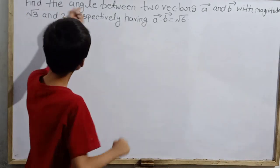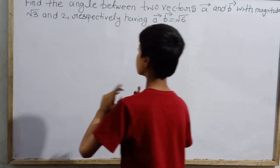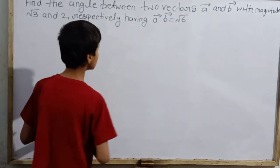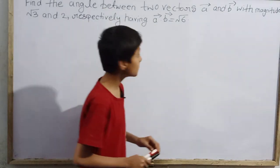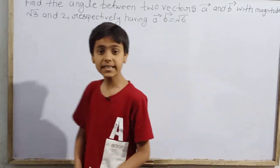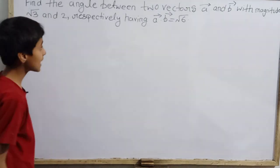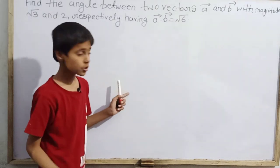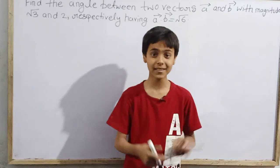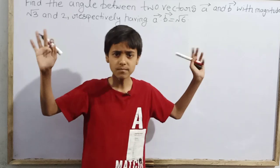Find the angle between two vectors, vector a and vector b, with magnitudes root 3 and 2 respectively, having vector a dot vector b equals root 6. This is a very simple question, it is really very easy. If you have to do math, it is just physics which we are going to study in 11th or 12th.